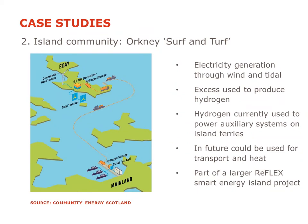One of the most exciting island communities is Orkney, which has long been a pioneer in community energy, particularly in wind. With wind and tidal, they now generate more electricity on average across the year than they can use themselves. They decided to use this excess renewable electricity to produce hydrogen — one of the islands has an electrolyser which produces hydrogen transported to the mainland, providing electricity for auxiliary systems on the ferry. As this scales up, more hydrogen could be produced for transport fuel or home heating. This is called the Surf and Turf project, part of a larger Reflex project aiming to create a smart energy island across the whole of Orkney.